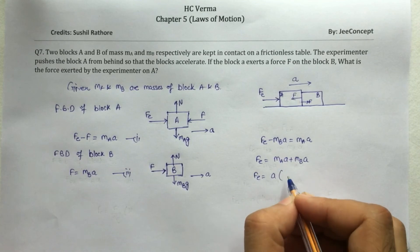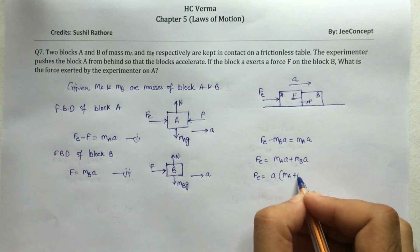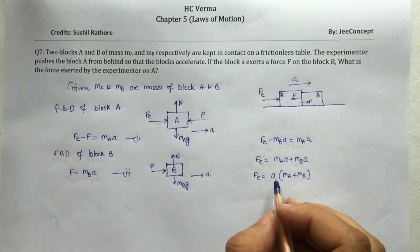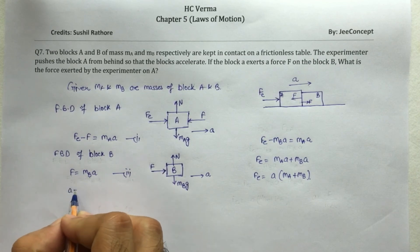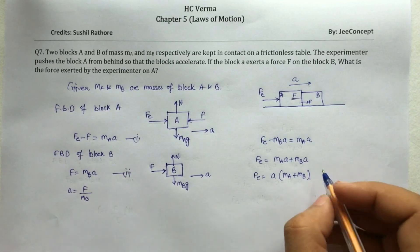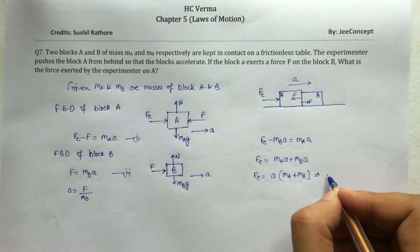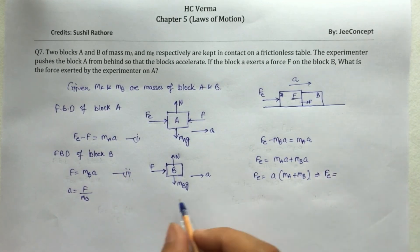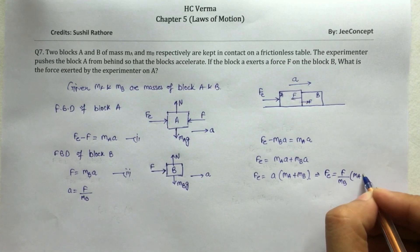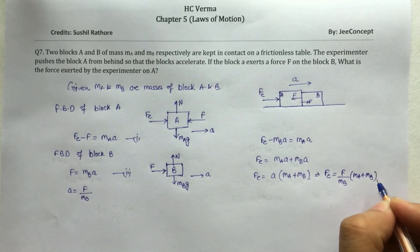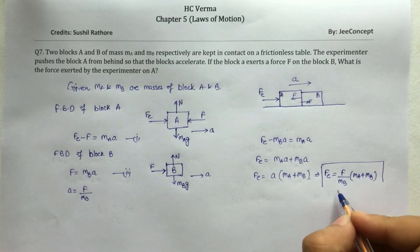Now Fe is equal to A times MA plus MB. Now from equation 2, A acceleration is force upon mass. So from this, acceleration is equal to force upon mass. So this implies the force due to experimenter is, I am replacing this acceleration value here. So F upon MB times MA plus MB. So this is the solution of this problem.